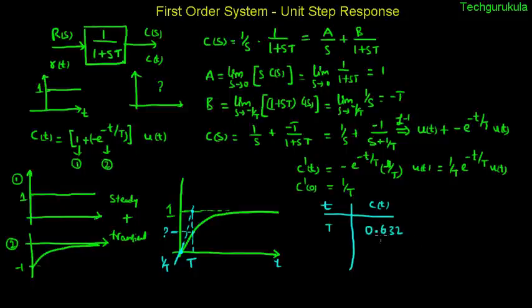I have used a calculator to get these values. So at capital T, the output would have reached 63.2 percentage of its final value. At 2t it will reach 86.5 percentage of its final value, 3t it will reach 95 percent, and 4t it will reach 98.2 percent.